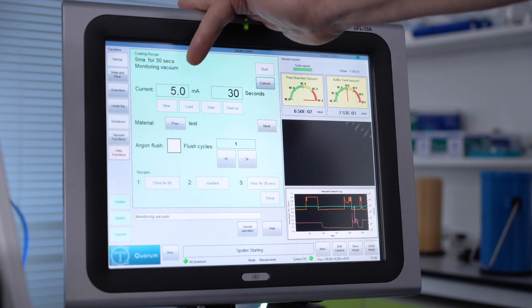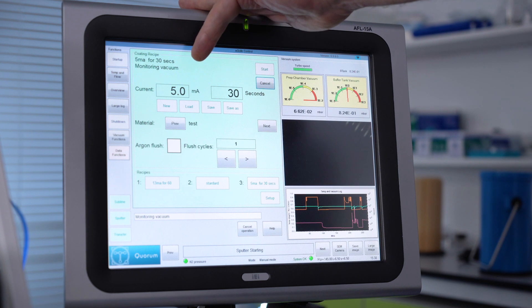So now the system is bleeding in the argon into the system and monitoring the vacuum until it gets to the right level. And then once it sees the argon pressure being correct, it will then turn on the high voltage and look for the current to start.